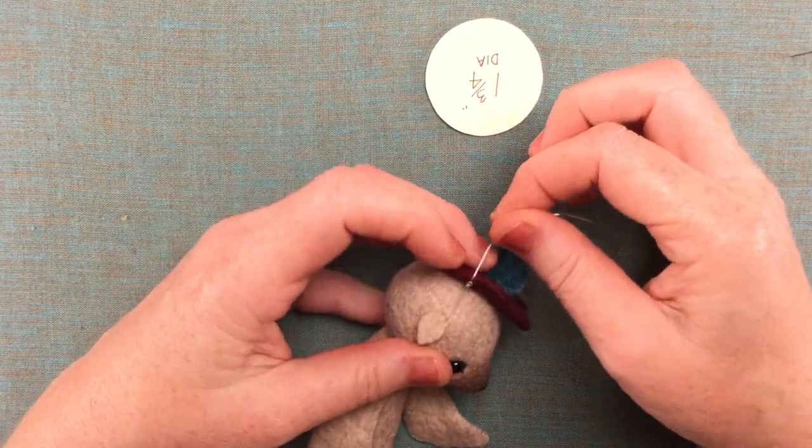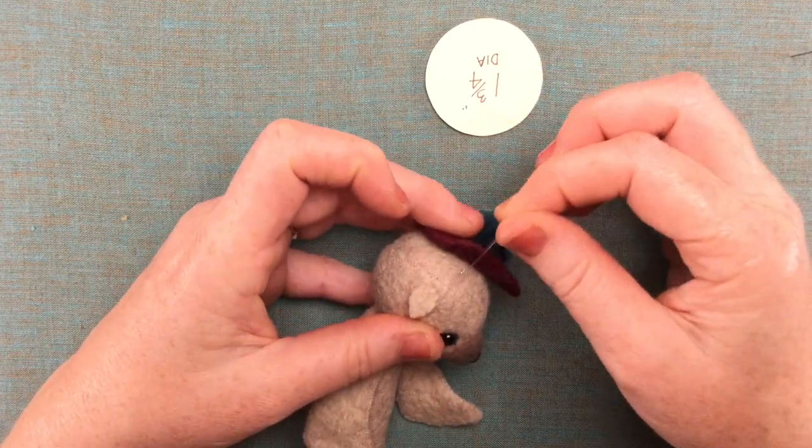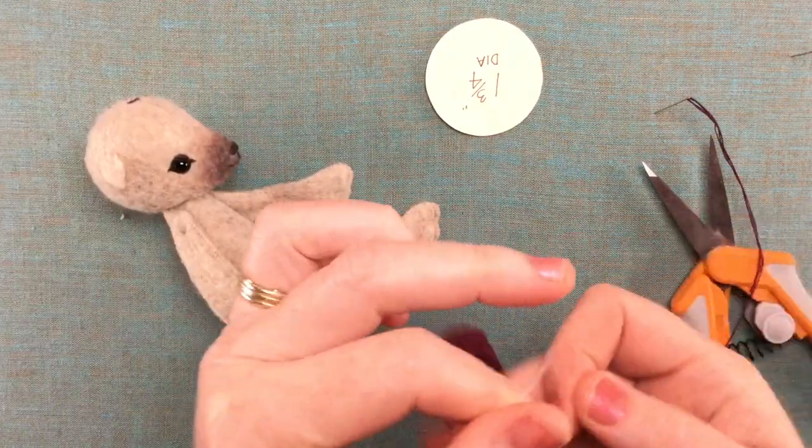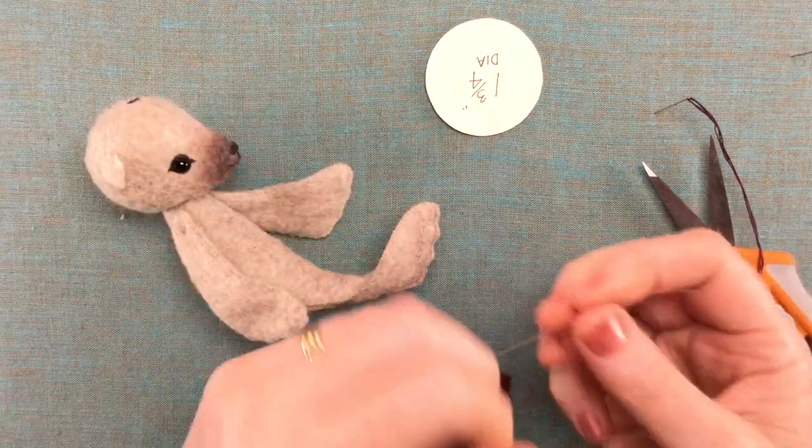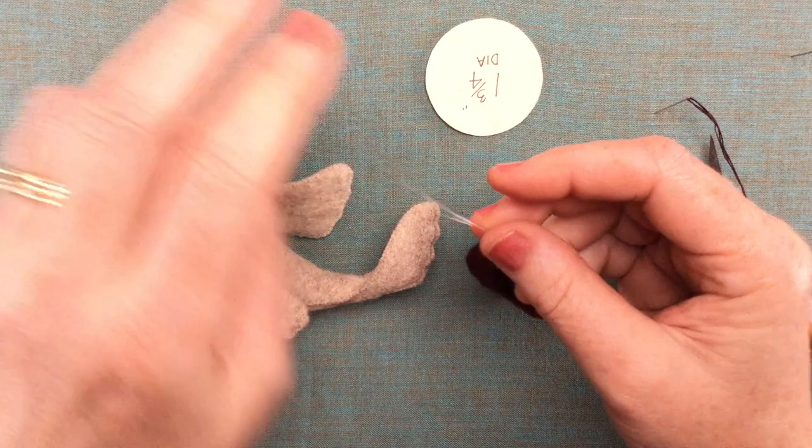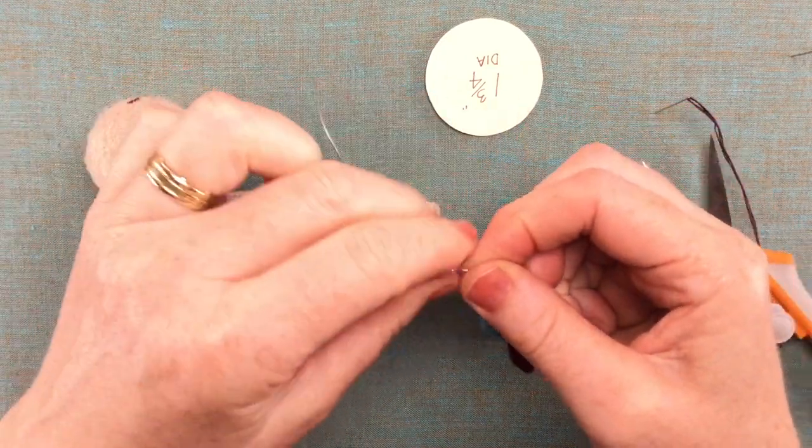That looks a bit better. So now when it's stretched a little bit it's just under the brim, so I'm going to go ahead and make a second knot on top of that one and pull it nice and tight.